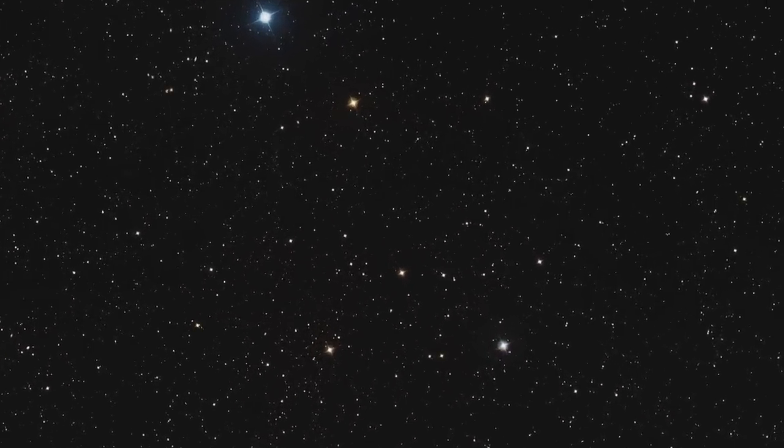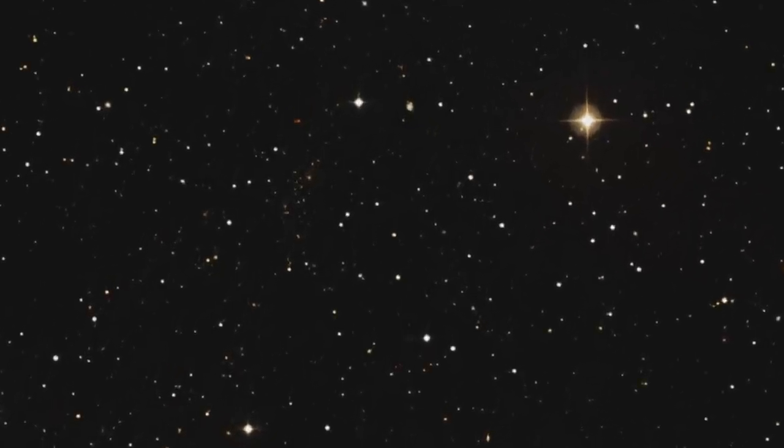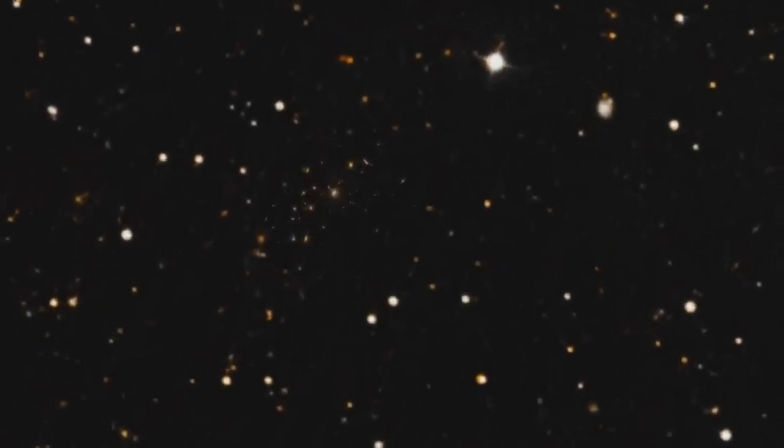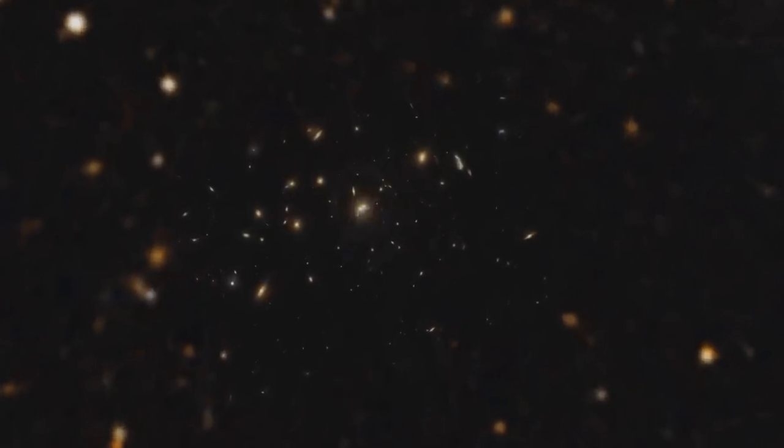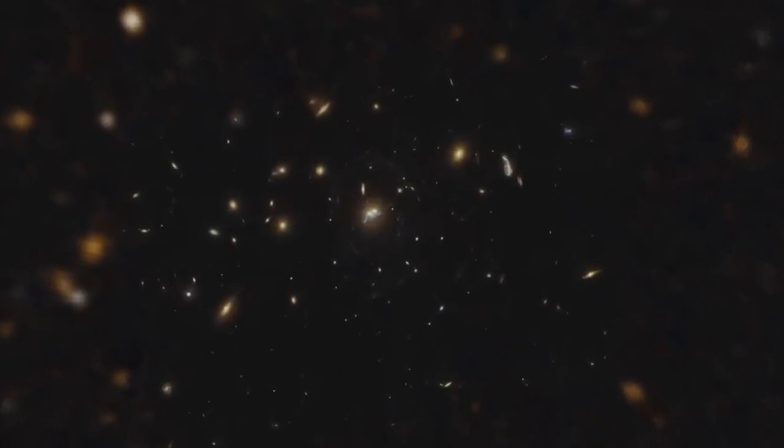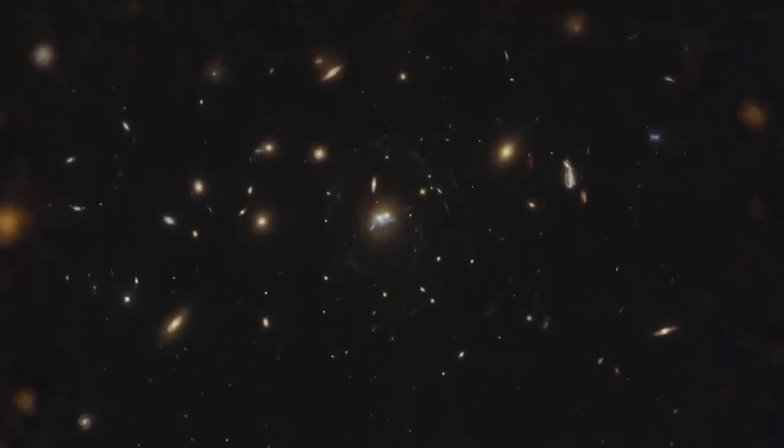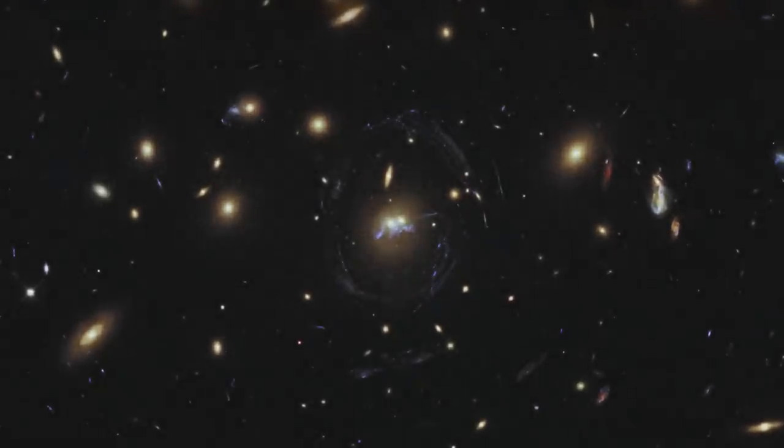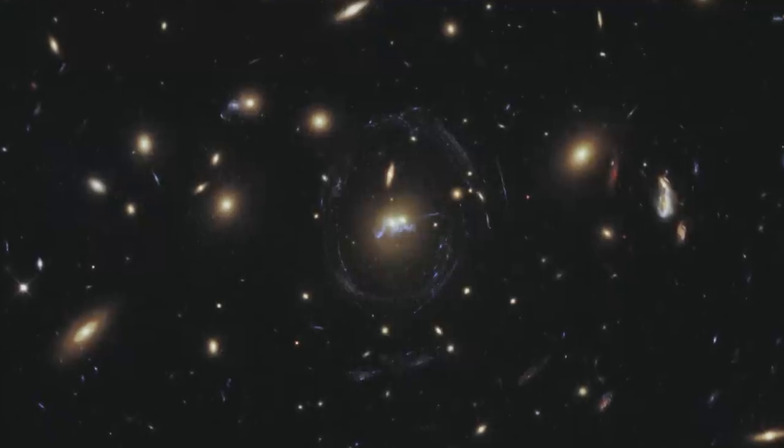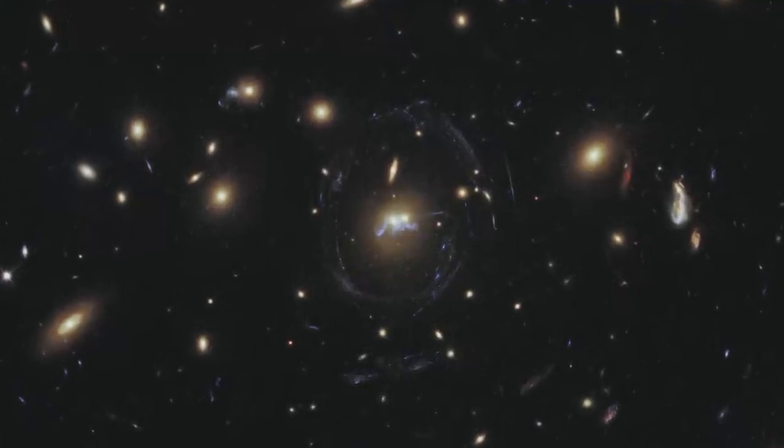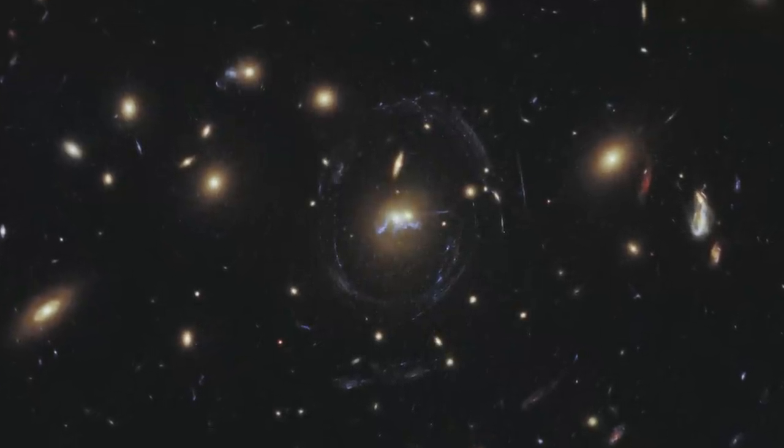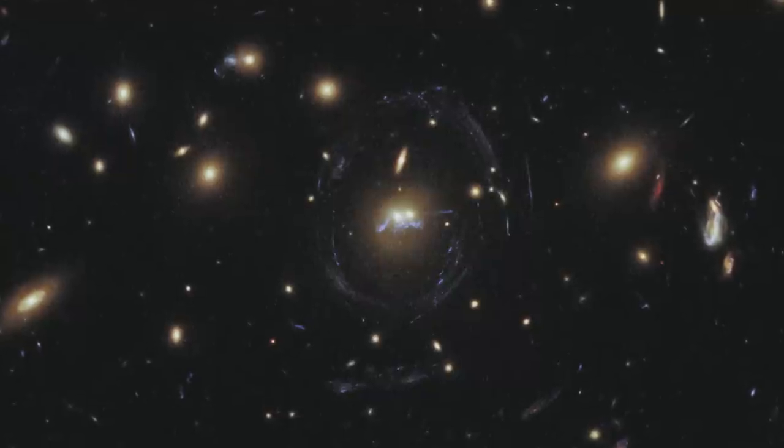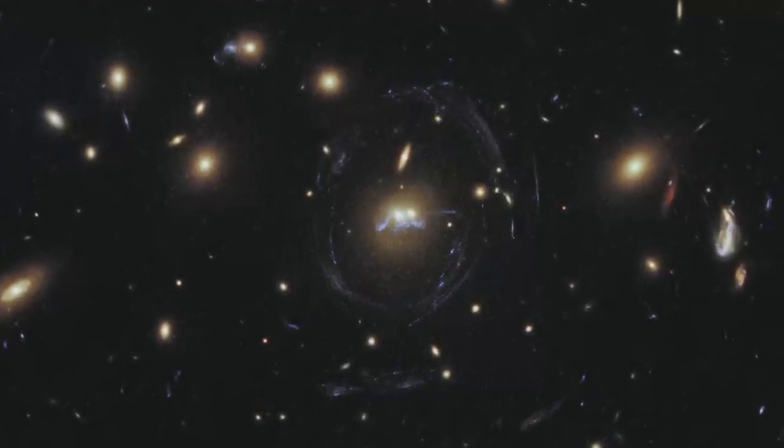This time, Hubble has captured something a little different, a little more unusual. At the centre of this image lie two elliptical galaxies, part of a galaxy cluster known rather prosaically as SDSS J1531 plus 3414. This cluster contains so much mass that it has bent light from more distant galaxies to form the spectacular blue arcs that surround it.